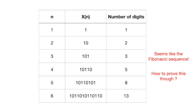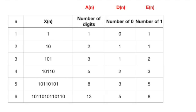Now we have got the intuition, how do we go about proving it? We need more information for sure. Why not we break down the number of digits further into two columns, namely the number of digits 0 and 1. This seems like the next logical thing to do. We see that those seem like Fibonacci series as well.